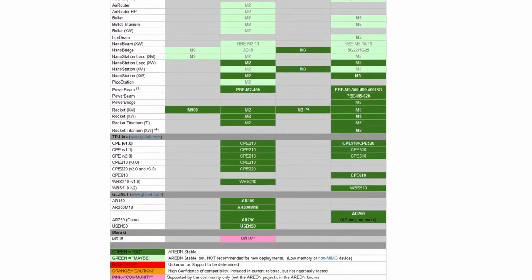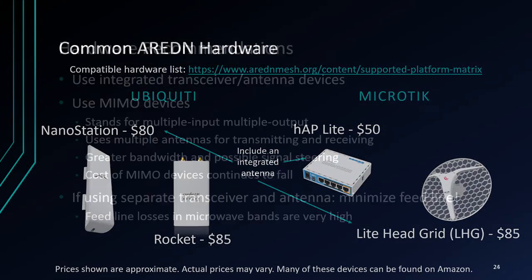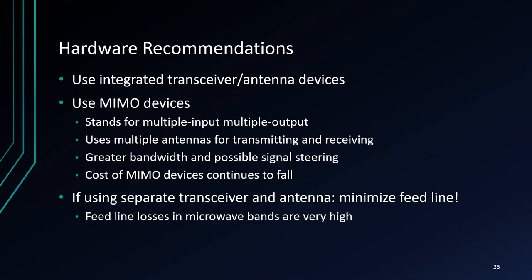I'll talk more about ARDEN in a moment. Many devices currently available have a transceiver and antenna integrated into a single unit, similar to many home routers. When shopping for hardware, I would recommend looking for devices that are multiple input, multiple output (MIMO) capable — such devices have multiple antennas so they can receive and transmit multiple signals simultaneously. If you get a device that needs a separate antenna, remember to minimize the length of your feed line, since we're operating in the microwave bands and feed line losses are very high.